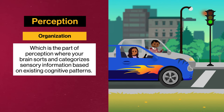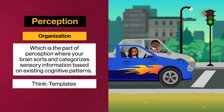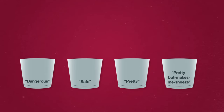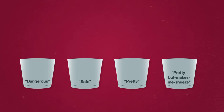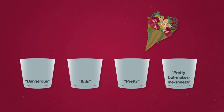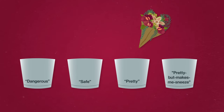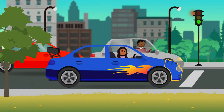From there, you move on to organization, which is the part of perception where your brain sorts and categorizes sensory information based on existing cognitive patterns — basically templates we've made to help us reason and problem solve. Your brain is sorting information into bins based on your prior experiences. So your brain might see a snake and sort it into the dangerous bin, or select a flower and move it into the pretty-but-makes-me-sneeze bin. In this instance, maybe you've seen a car accident before, so your cognitive patterns say that busted fenders are caused by car wrecks, and you categorize the damage as the result of a collision.